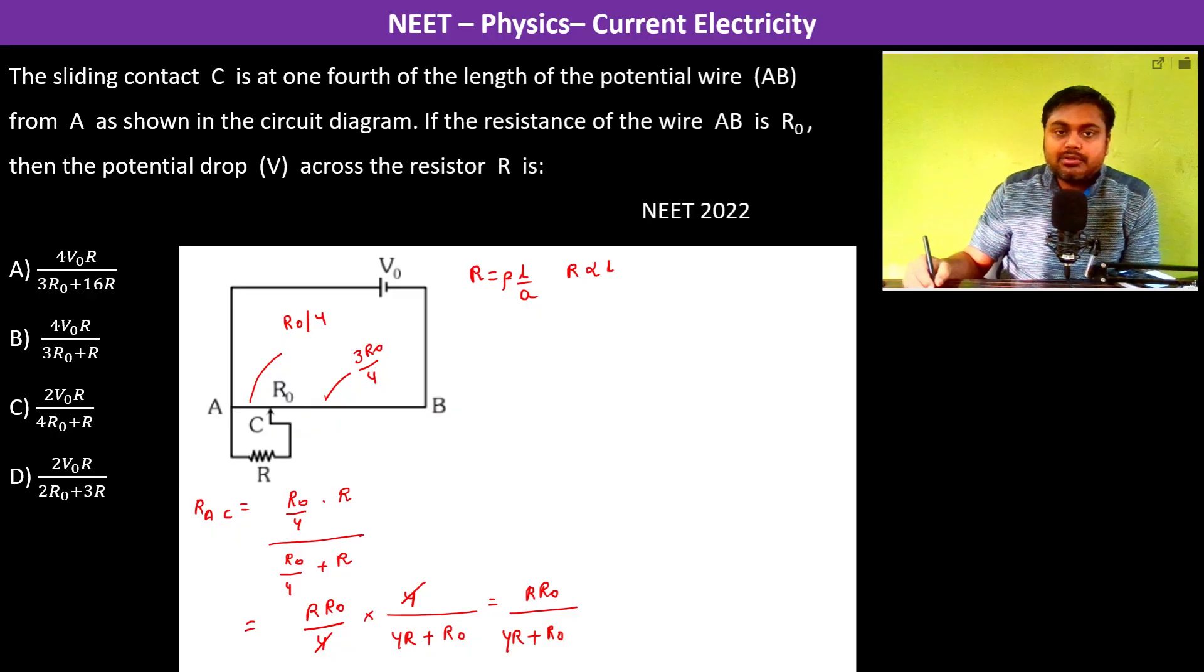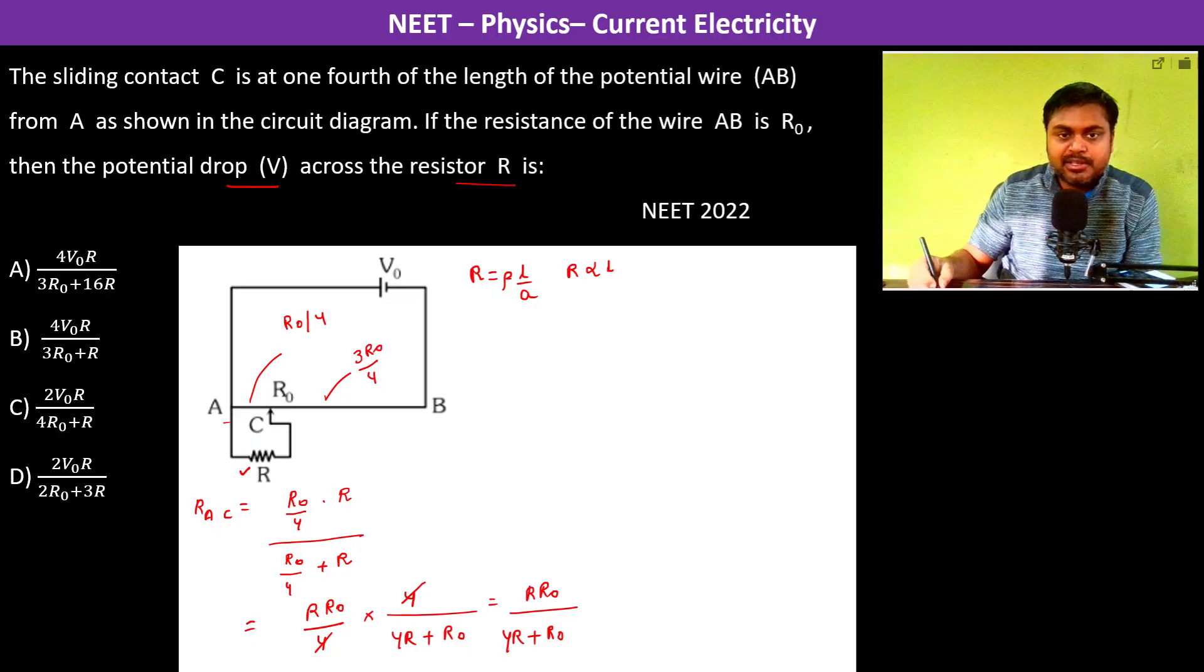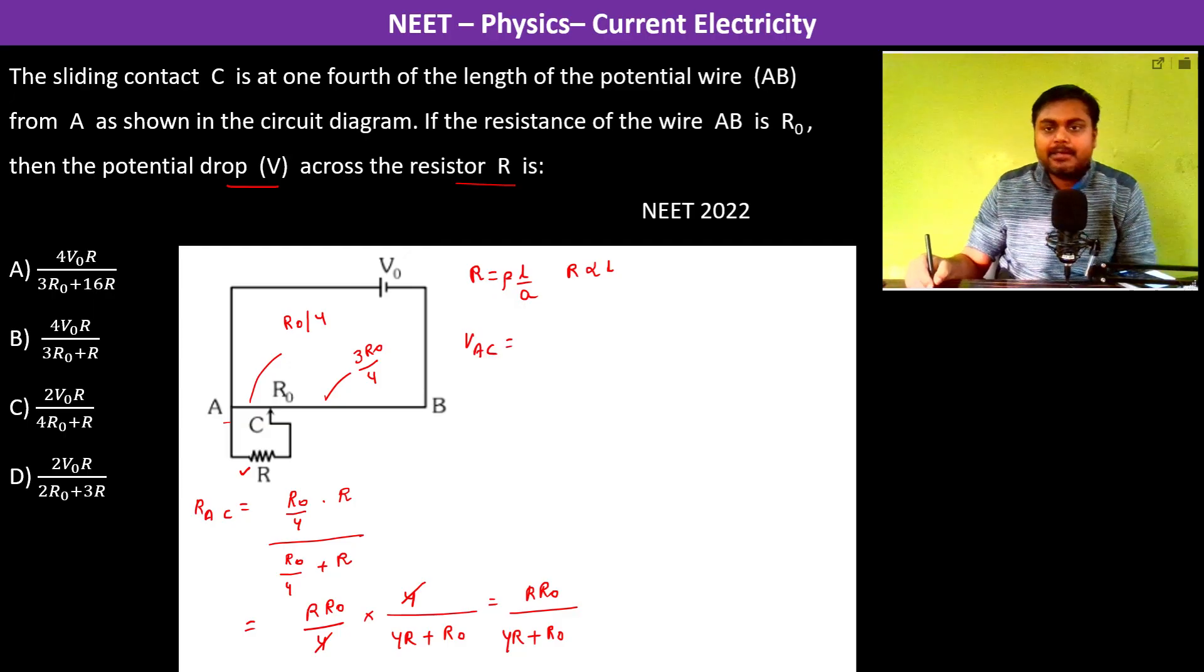Now we have to find out the potential drop across the resistor R. So basically the potential drop we have to find is VAC.